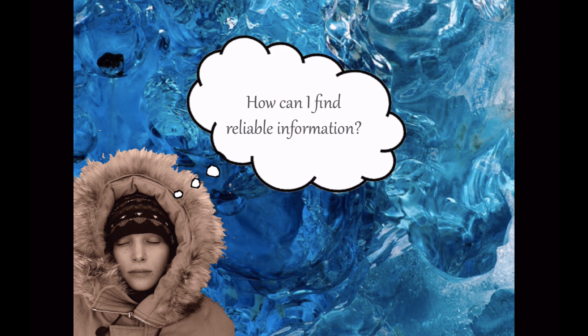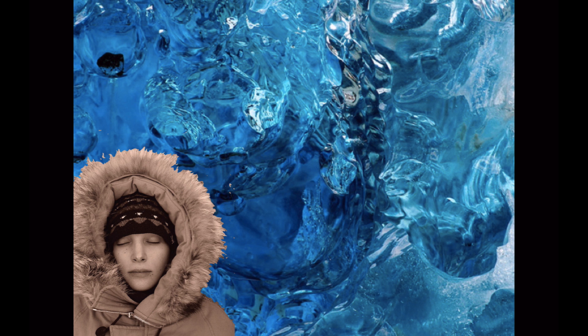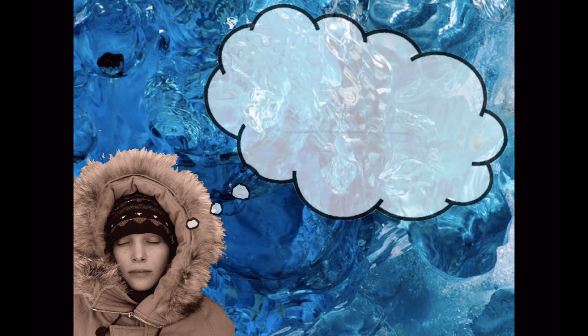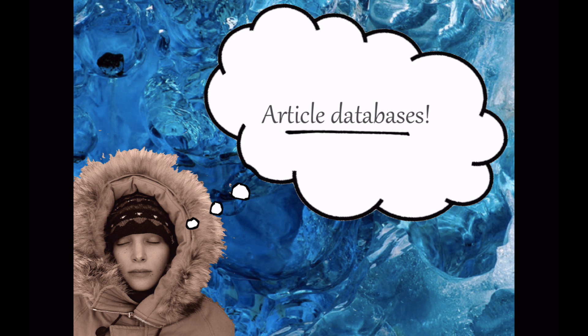So it's important to begin academic research by asking, where should I look for reliable information about my topic? Often, a helpful place to look is in an article database. An article database is a space in which a tremendous amount of information is collected and organized to make it findable.